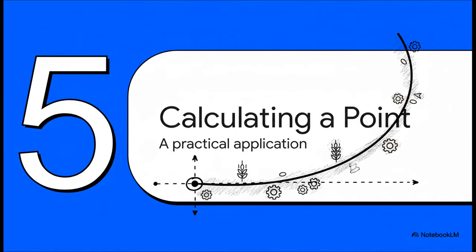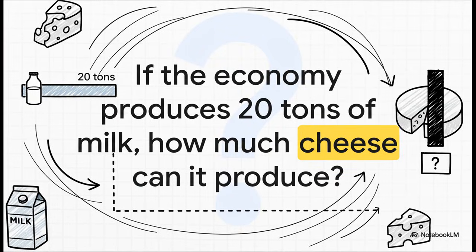Let's put all this into practice. We're going to calculate a specific production mix that is on the frontier but isn't one of those extreme all-or-nothing points. So here's the scenario. The economy decides to produce 20 tons of milk.